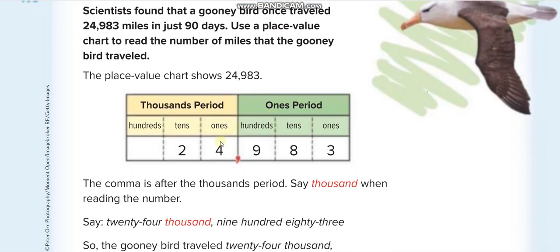At each comma, say the name of the period. Here's how you read the number: read the digits before the comma — 24 — then say the name of the period, which is thousand, giving us 'twenty-four thousand.' Then place the comma and read the next part: nine hundred eighty-three. No comma after, so we don't say the period name.